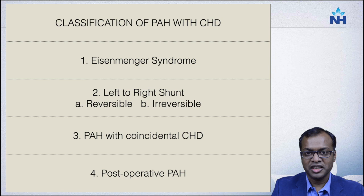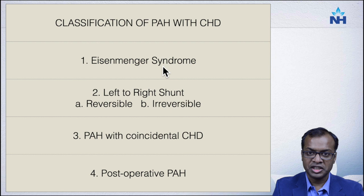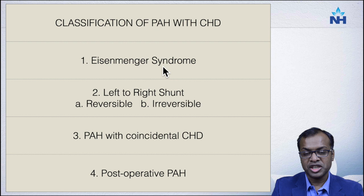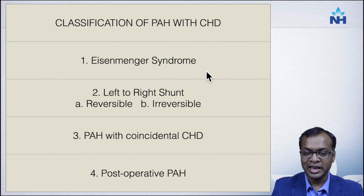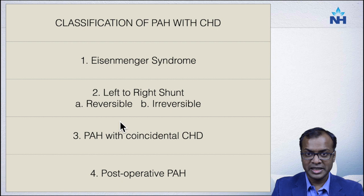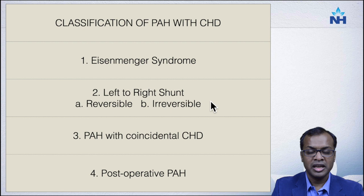The classification of pulmonary artery hypertension in congenital heart disease has four groups. The simplest is Eisenmenger syndrome: initially there is a left-to-right shunt, but as pulmonary pressures increase, the right-sided pressure becomes so high that the shunt reverses to a right-to-left shunt. At this point, we cannot operate or close the shunt. Eisenmengerization must be recognized and reported. The second group is a left-to-right shunt — either reversible, where if the shunt is stopped pressures can revert to normal, or irreversible, where pressures are too high and surgical correction is no longer beneficial.